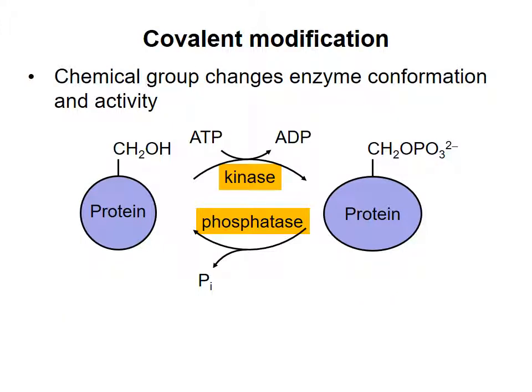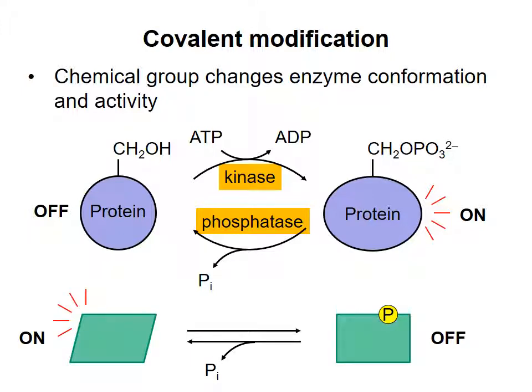Adding or removing chemical groups such as phosphate changes the shape or conformation of the enzyme, affecting activity. Usually the site of modification is different from the active site of the regulated enzyme, though the modification often changes the conformation of the active site. A particular type of modification may activate one enzyme but inhibit another, and the same enzyme might be activated by one modification and inhibited by a different modification.